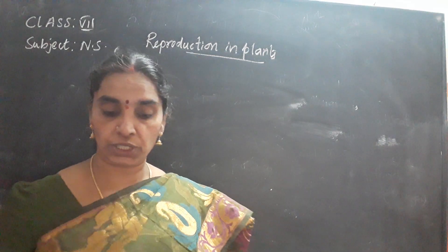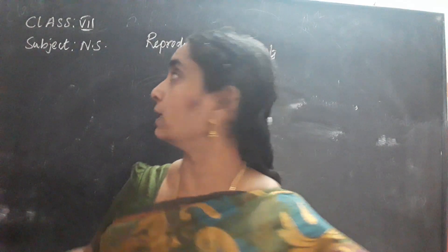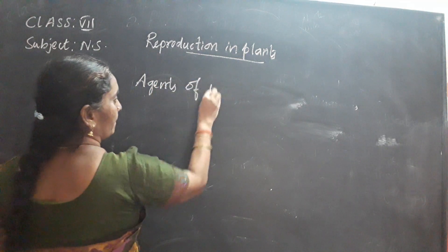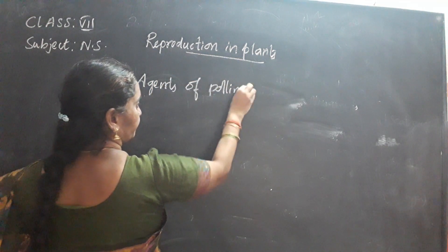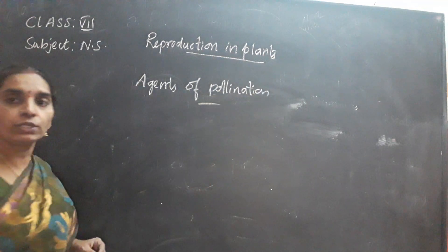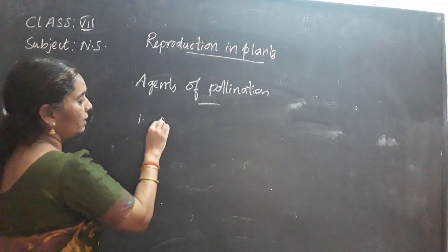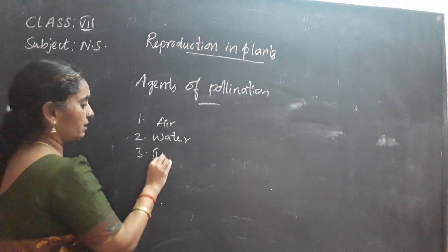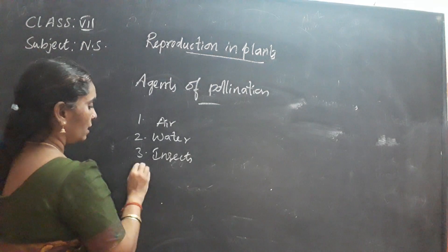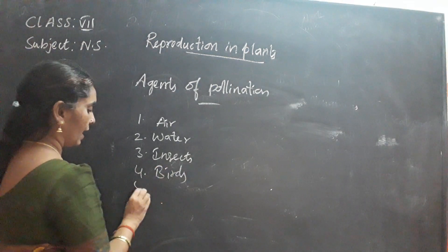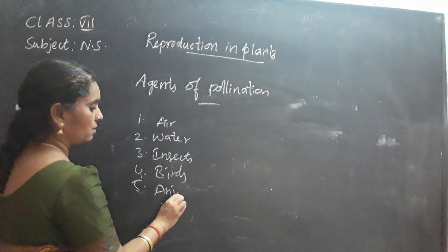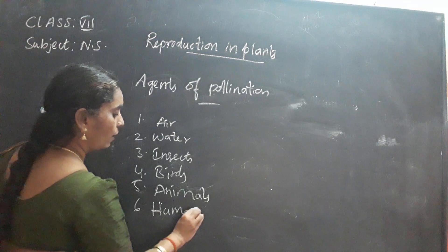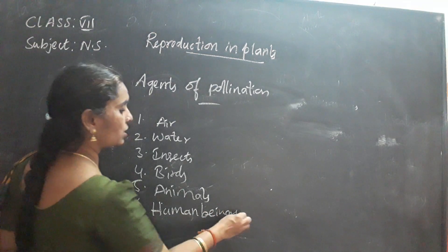I hope you understood that question. Now we will move to the next question about the agents of pollination. The agents of pollination are: air, water, insects, birds, animals, and human beings.